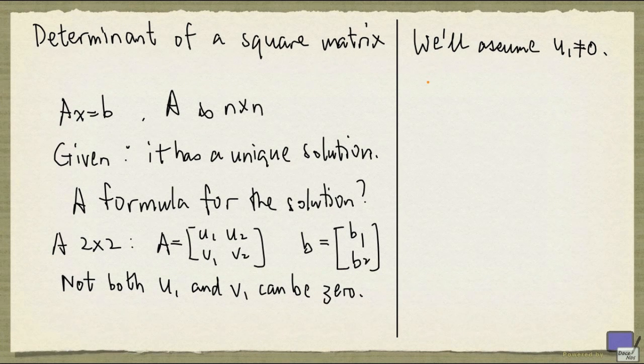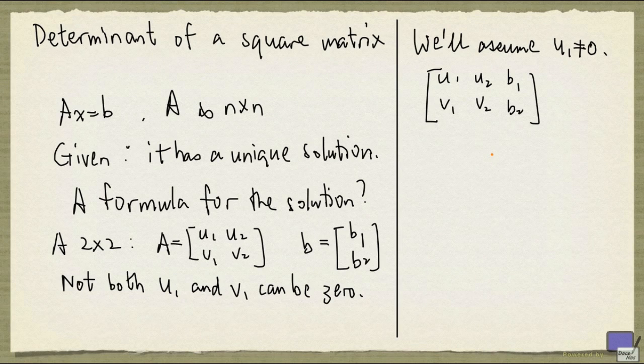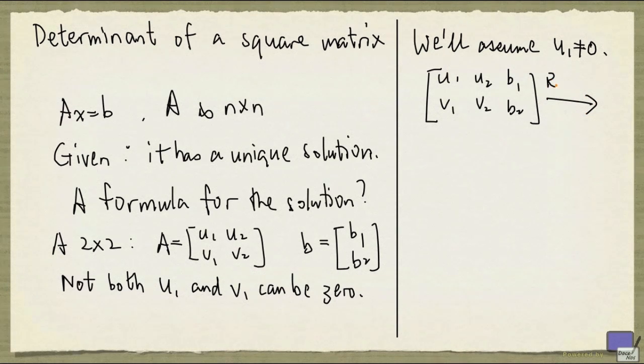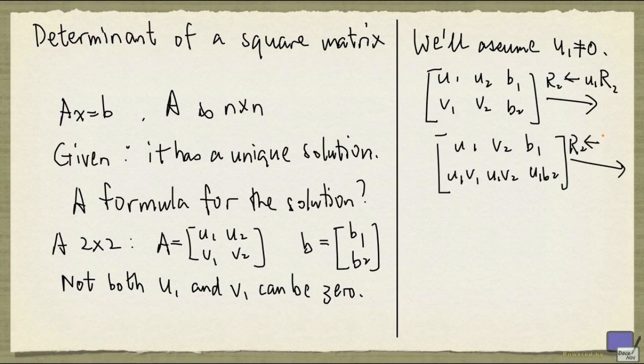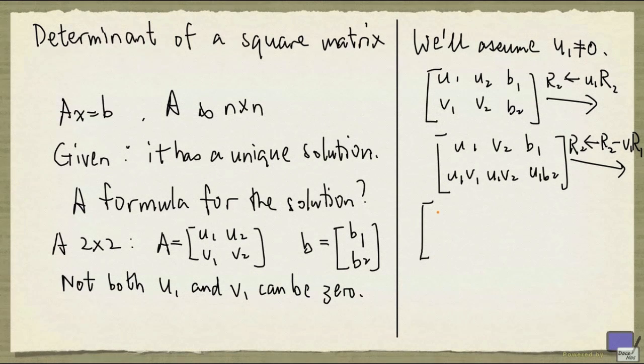So we're going to start with the augmented matrix, and perform some elementary row operations, until we know what the solution should be. So I'm going to replace row 2 by u1 times row 2, and then replace row 2 by row 2 minus v1 row 1. And so we'll end up with this.